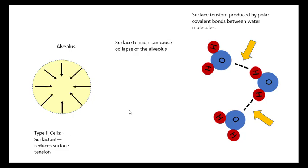There are other cells as well. And those are the type 2 cells that secrete surfactant, which help to reduce the surface tension and keep the alveoli and the lungs from collapsing.